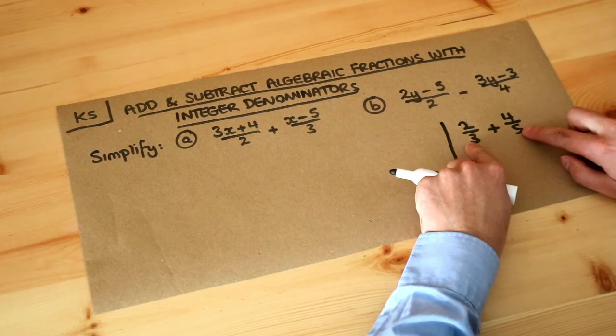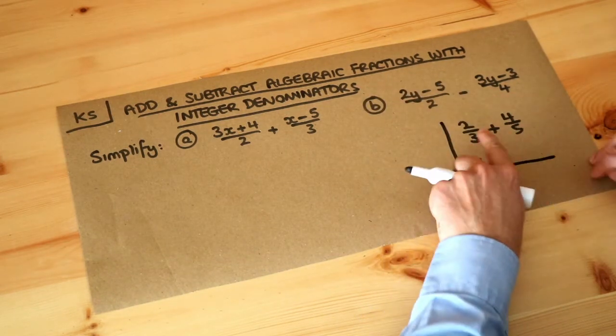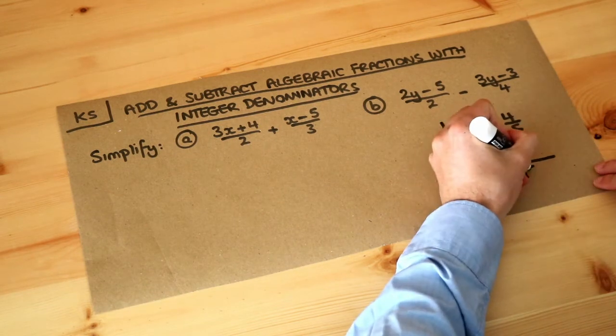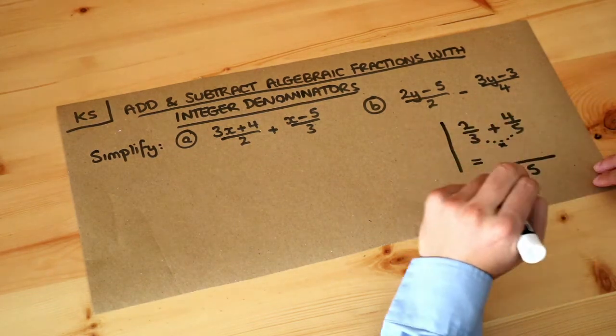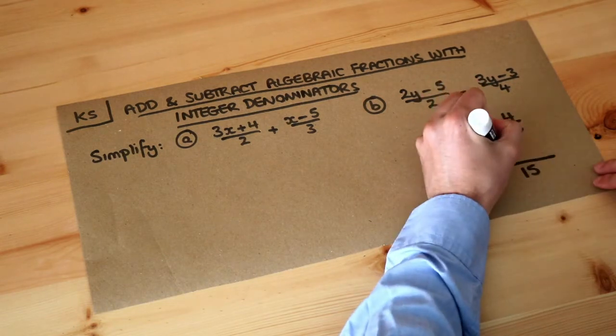Well we need the denominators to be the same and one way we could do it, to be quick about it, is we could multiply the denominators, so three times five is fifteen, and we could cross multiply the numerators. So the two gets multiplied by the five, which is ten.